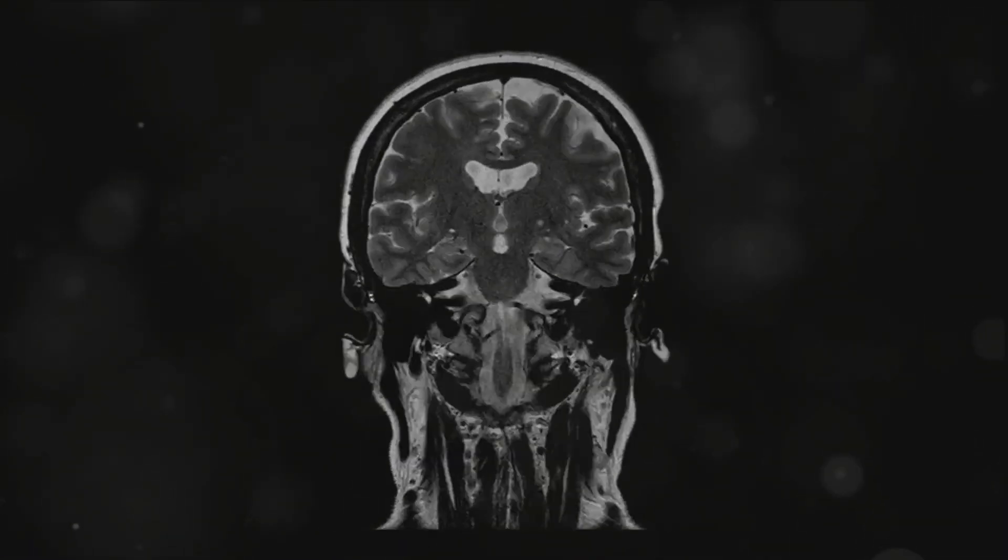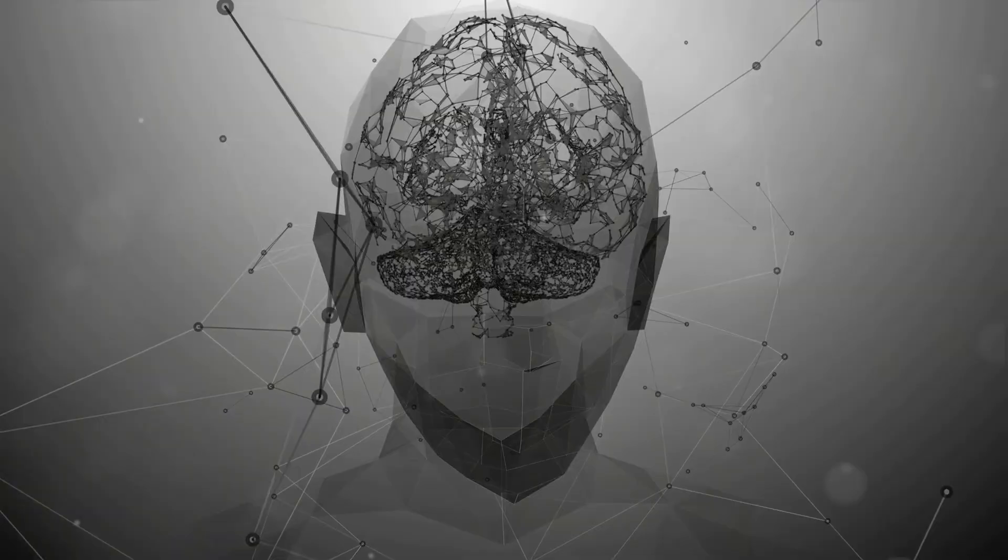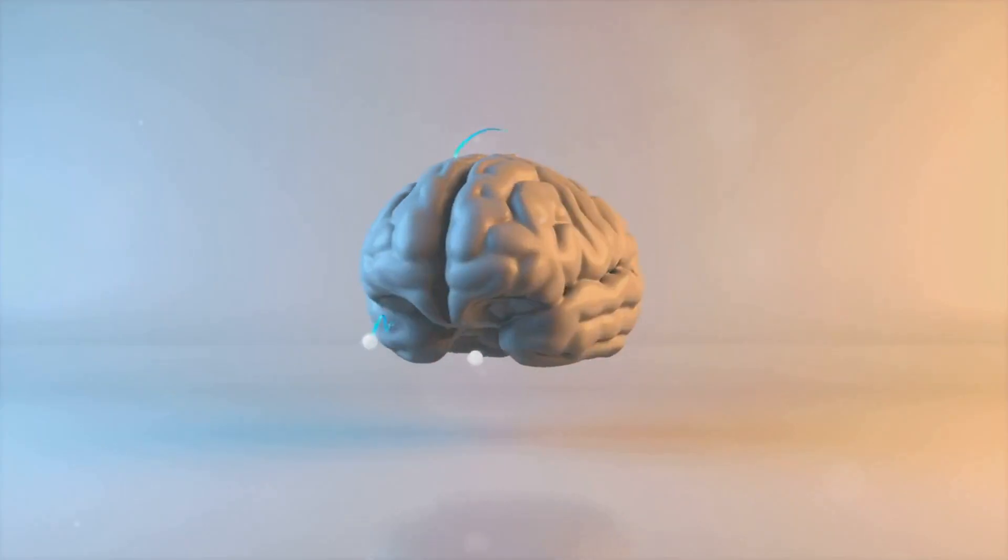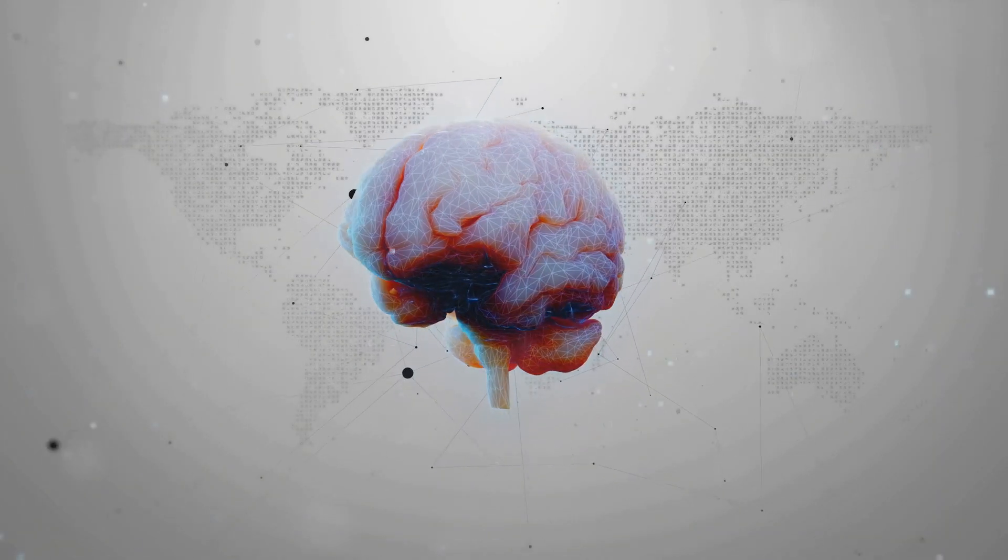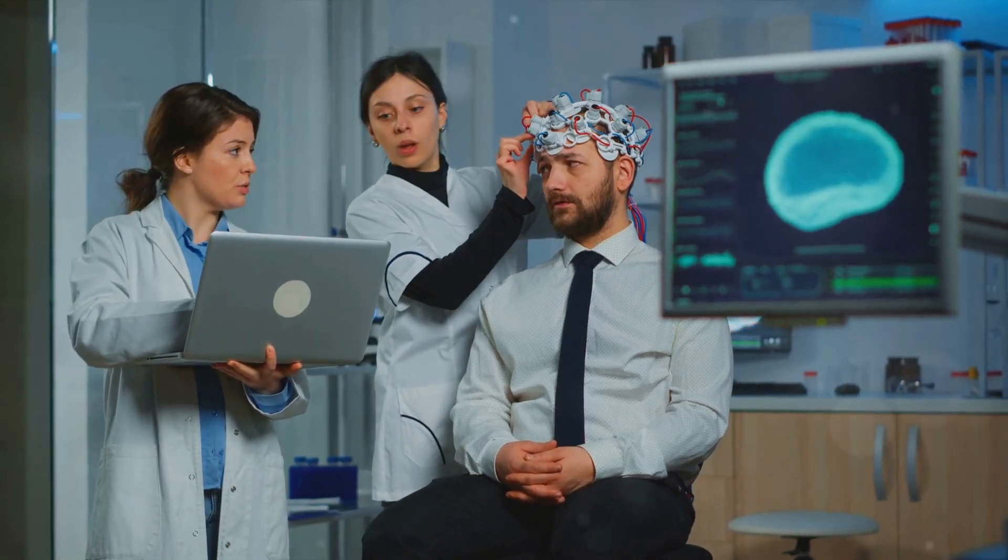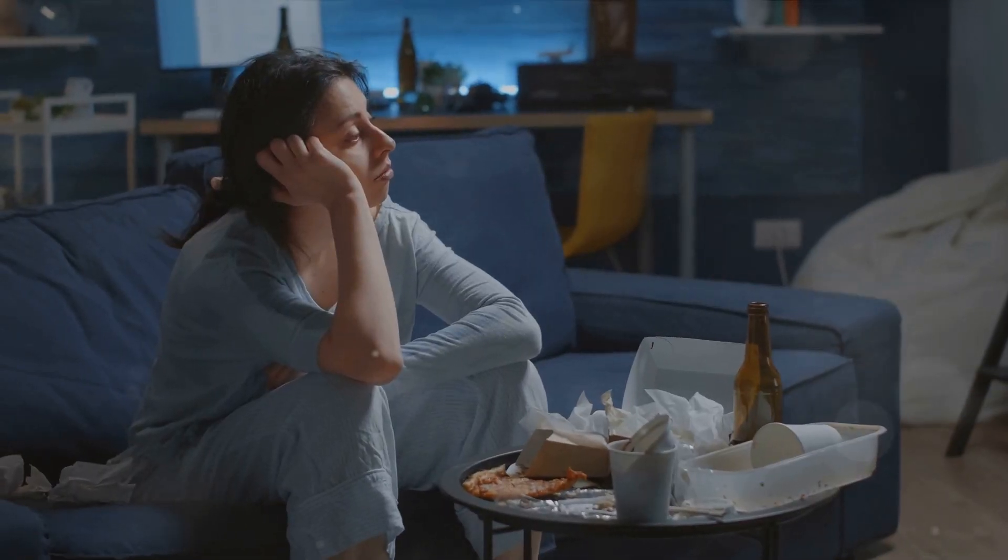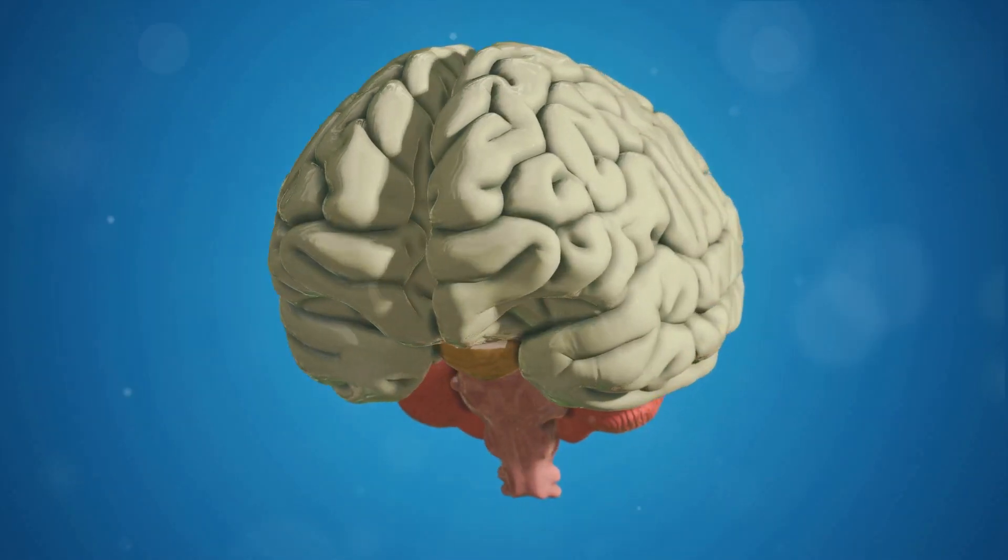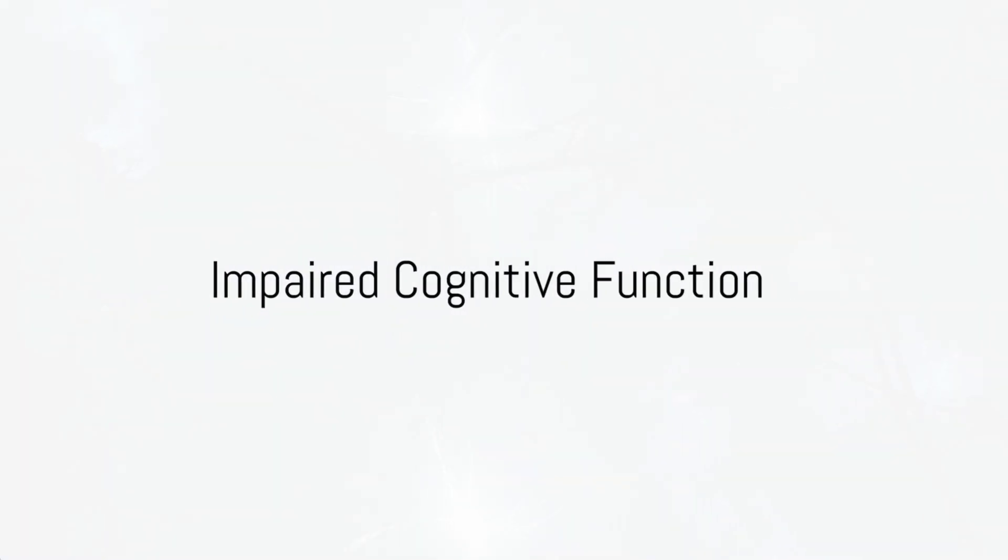These regions include the amygdala and the anterior cingulate cortex. These regions are vital for our ability to understand and process social situations and to control our emotions. When they undergo structural changes due to isolation, our social skills and emotional stability can be significantly impacted. We become less able to interpret and respond to social cues appropriately, and our emotional responses may become less predictable. Isolation can literally reshape our brains.